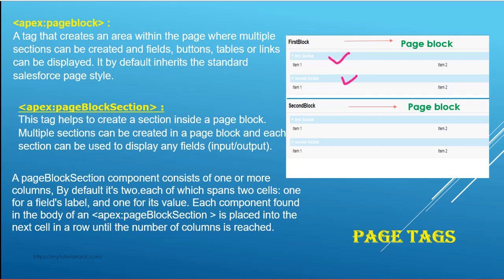In order to create the sections we use the pageBlockSection tag, and inside of each section you can add columns. A pageBlockSection component consists of one or more columns, and by default the number of columns is two. If you add more elements to the section, the first element goes to column one, the second goes to column two, and a third element will go to the row below. So by default it will not create a column three or four — the maximum is two.